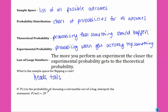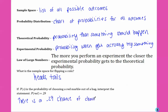If P(x) is the probability of choosing a red marble out of a bag, interpret the statement P(red) = .29. This is saying there is a .29 chance of choosing a red marble.